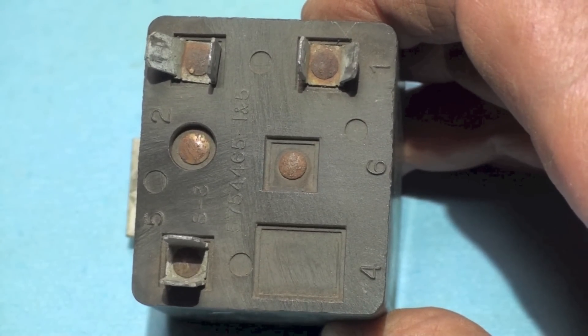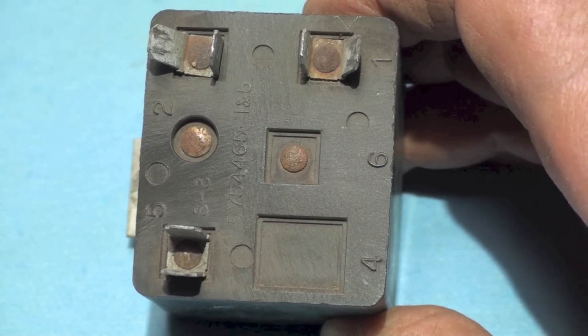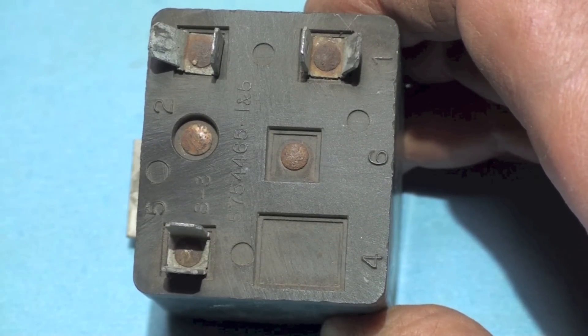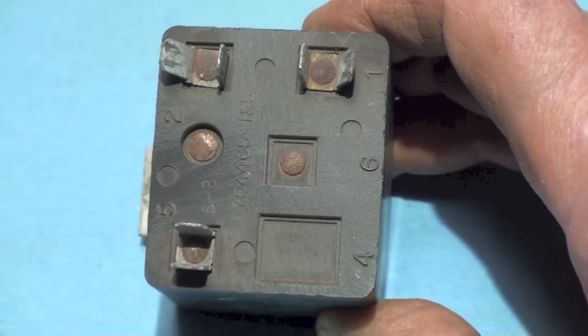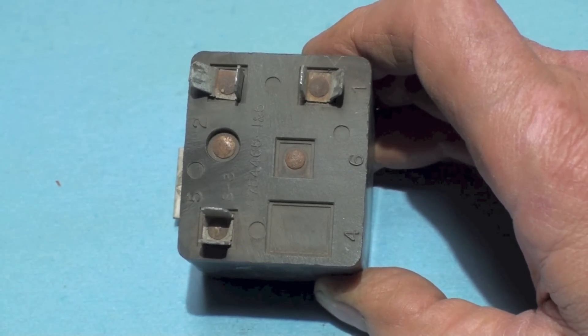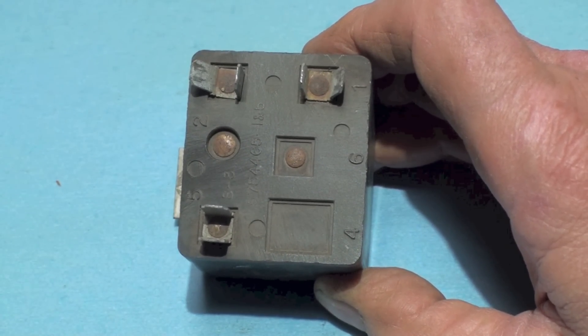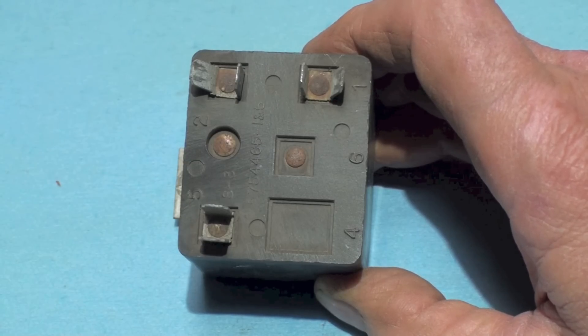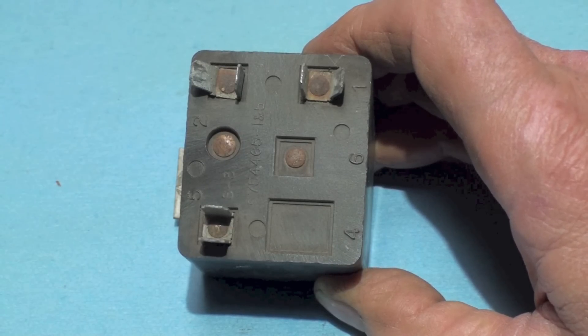Now this is a normally closed relay that energizes using back EMF, so it's a little bit of an odd duck but it works really good. Under normal conditions, the switch will be closed when the compressor starts and that'll have the start winding energized.